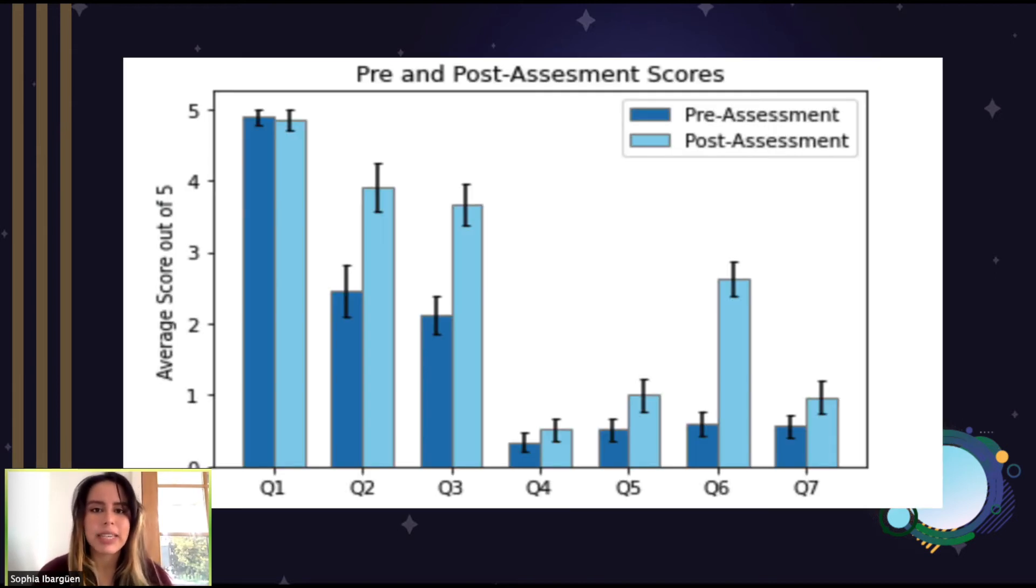This bar chart depicts the data of the premodular assessment in dark blue and the postmodular assessment in a contrasting light blue. The error bars seem to show that there was a significant improvement, particularly in questions two, three, and six, as mentioned before, and a noticeable improvement in the scores of every other question pertaining to statistical analysis topics.